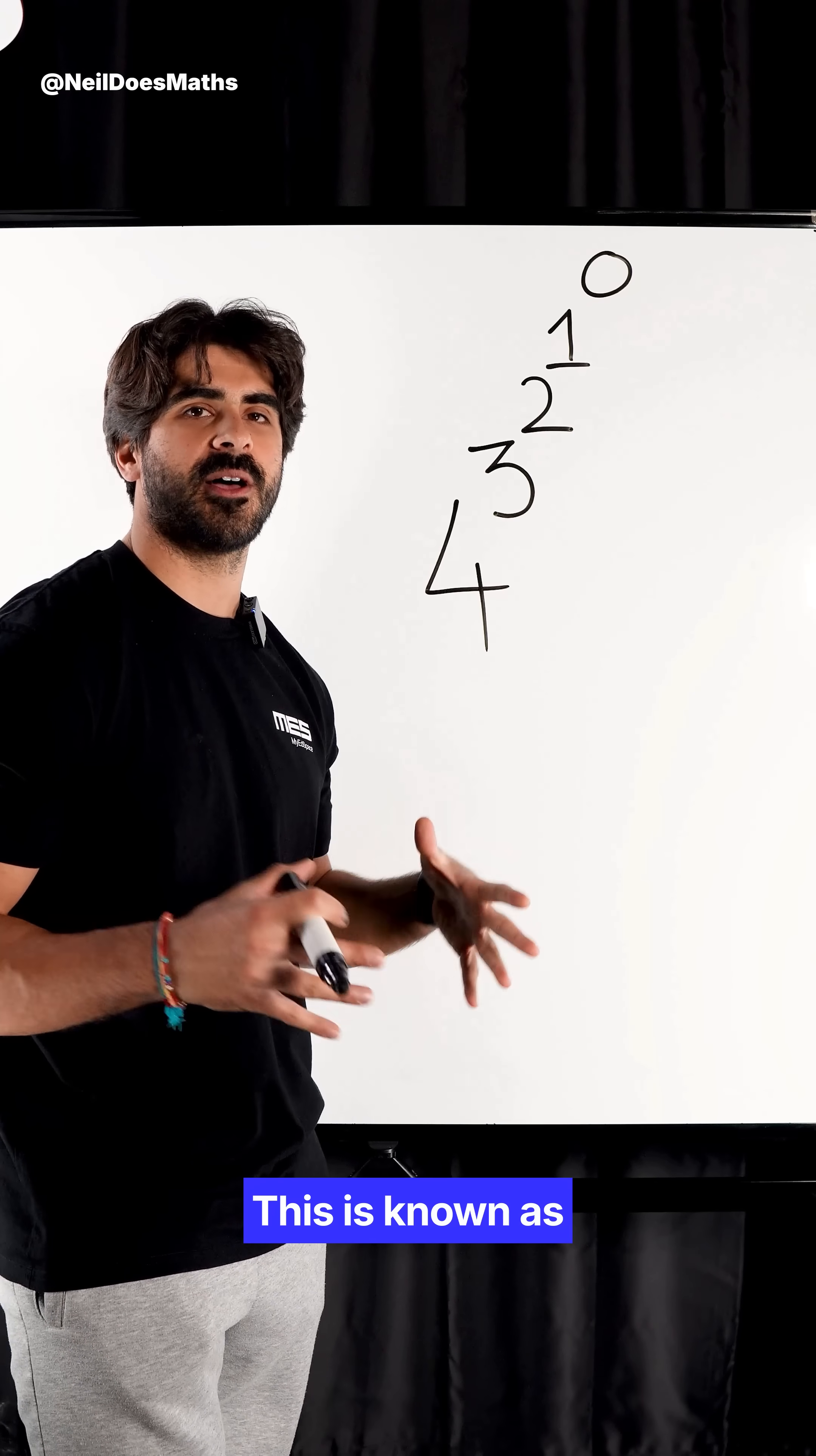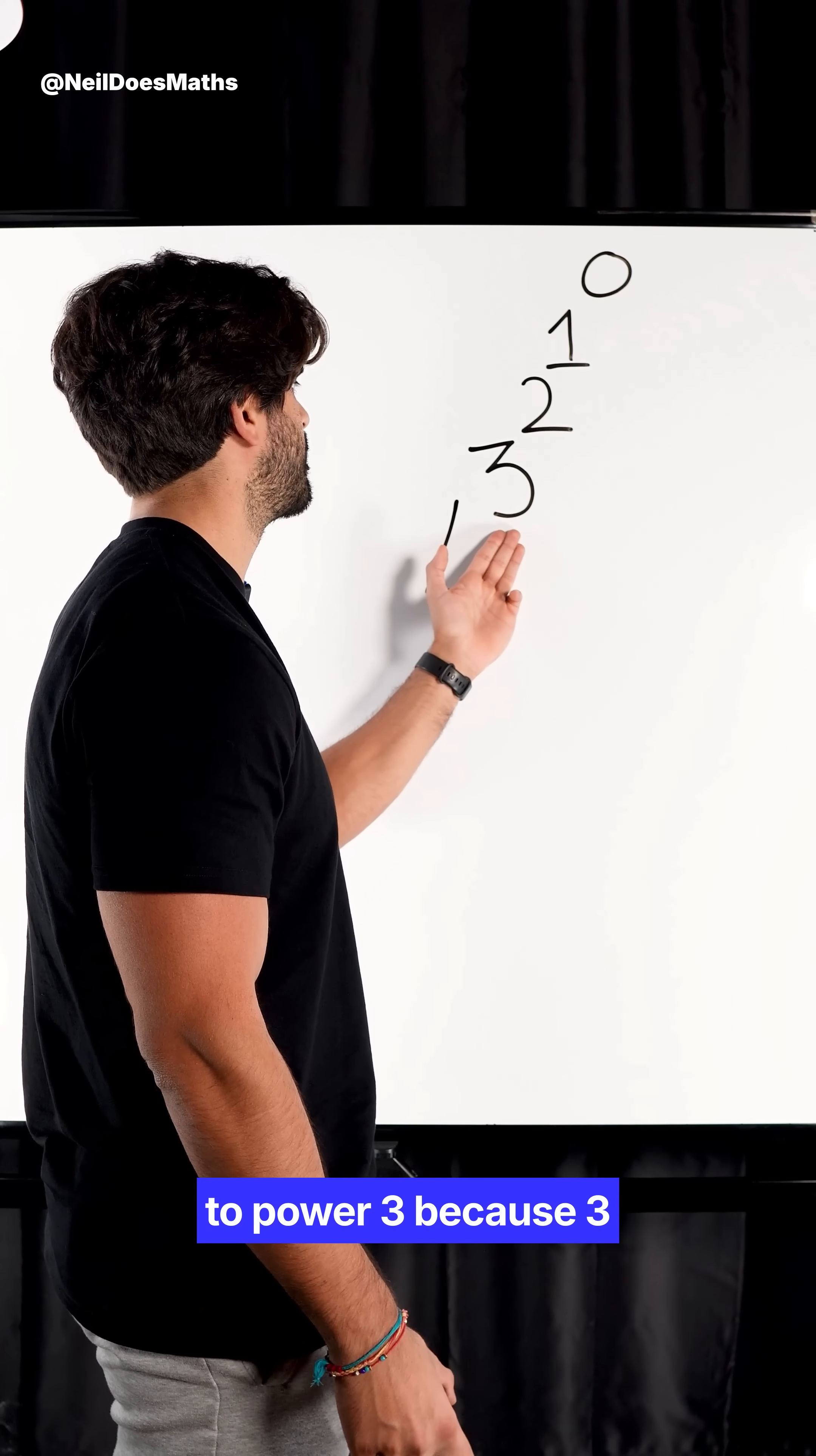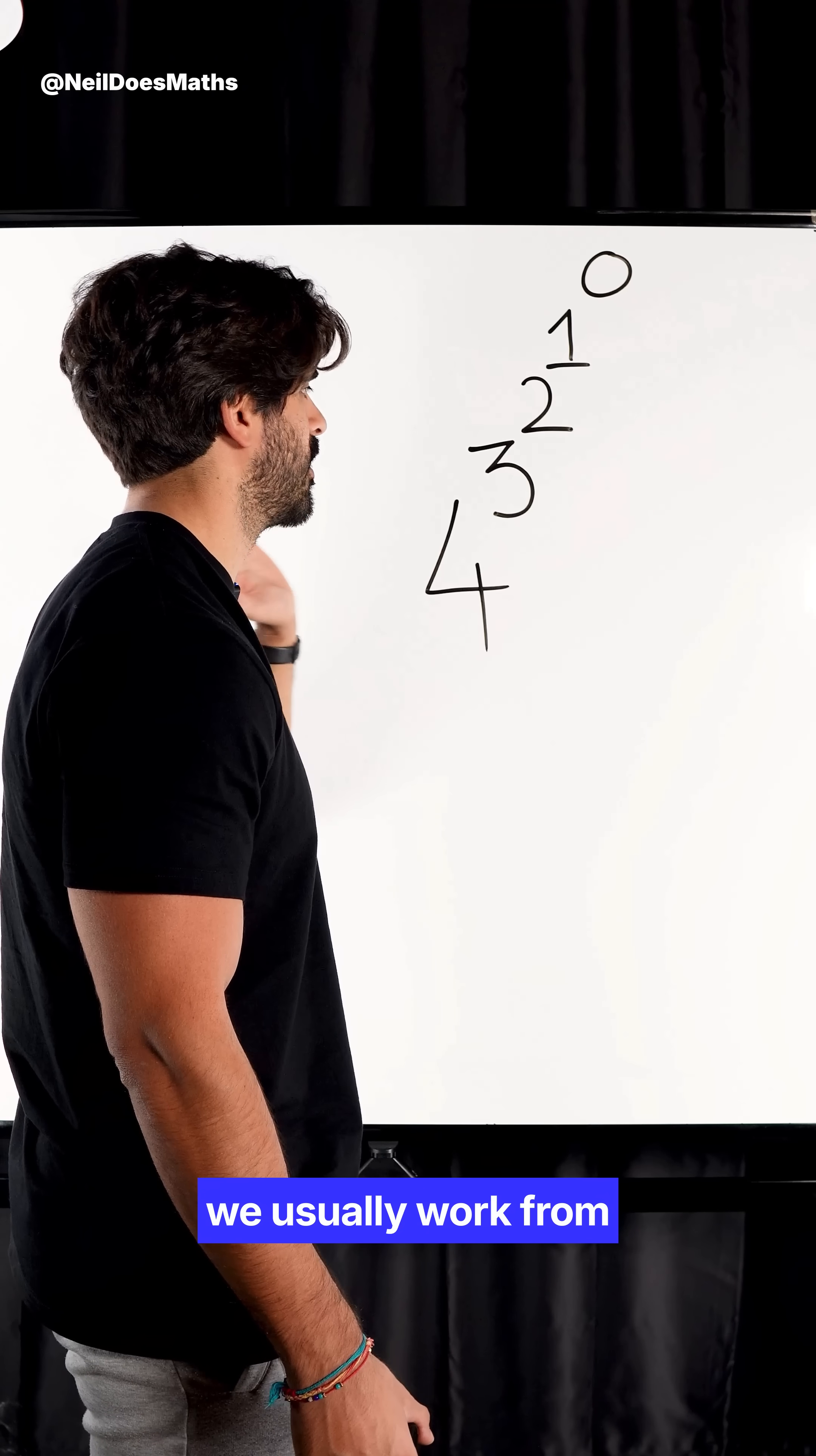This is known as a power tower. So we have four to the power of three, but I can't do four to the power of three because three has a power of two to the power of one to the power of zero. So actually, we need to work from the right to the left, even though we usually work from the left to the right.